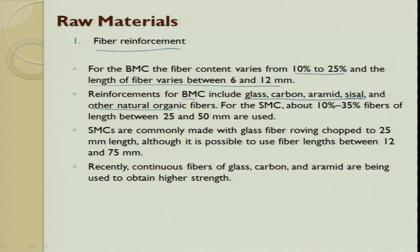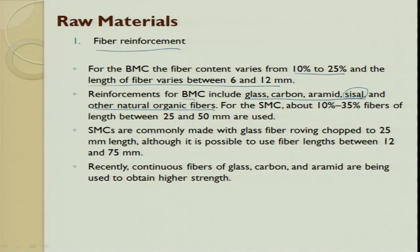Sisal and other organic natural fibers are also used today. For example, diving boards at swimming pools are made by compression molding — manufacturers have moved from glass fibers to sisal as a natural fiber alternative. For SMC, the fiber volume fraction can go slightly higher, from 10% to 35%, with fiber lengths of 25 to 50 mm. Glass fiber roving and chop strand mat of this length are commonly used, and recently continuous fibers are also used.